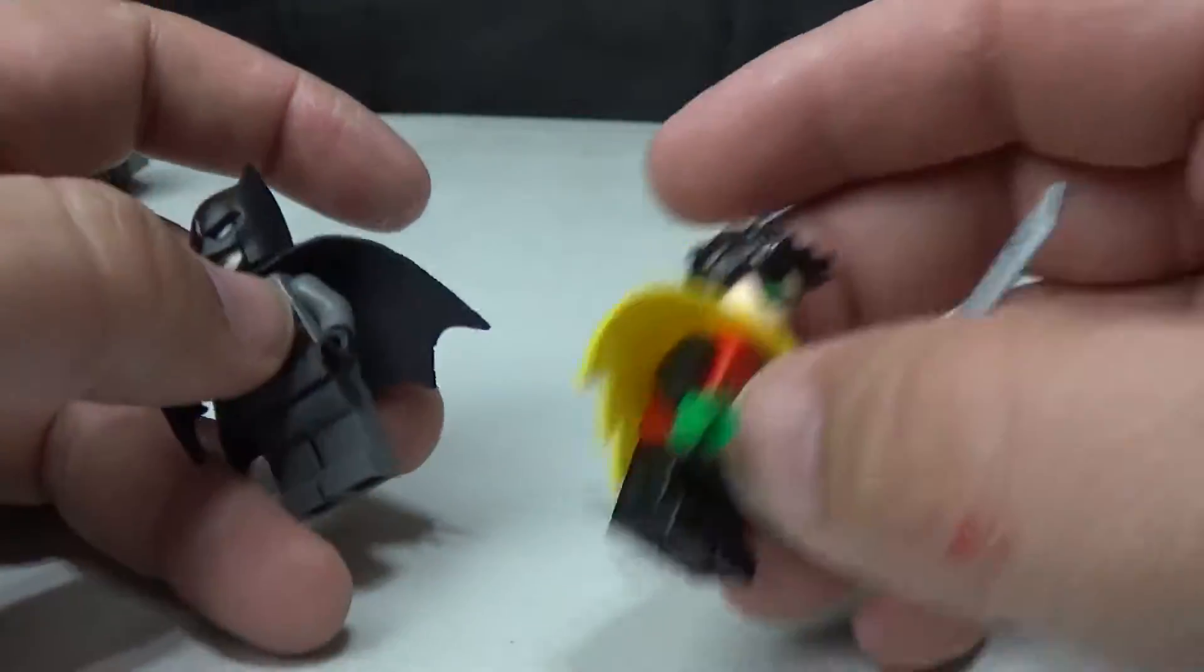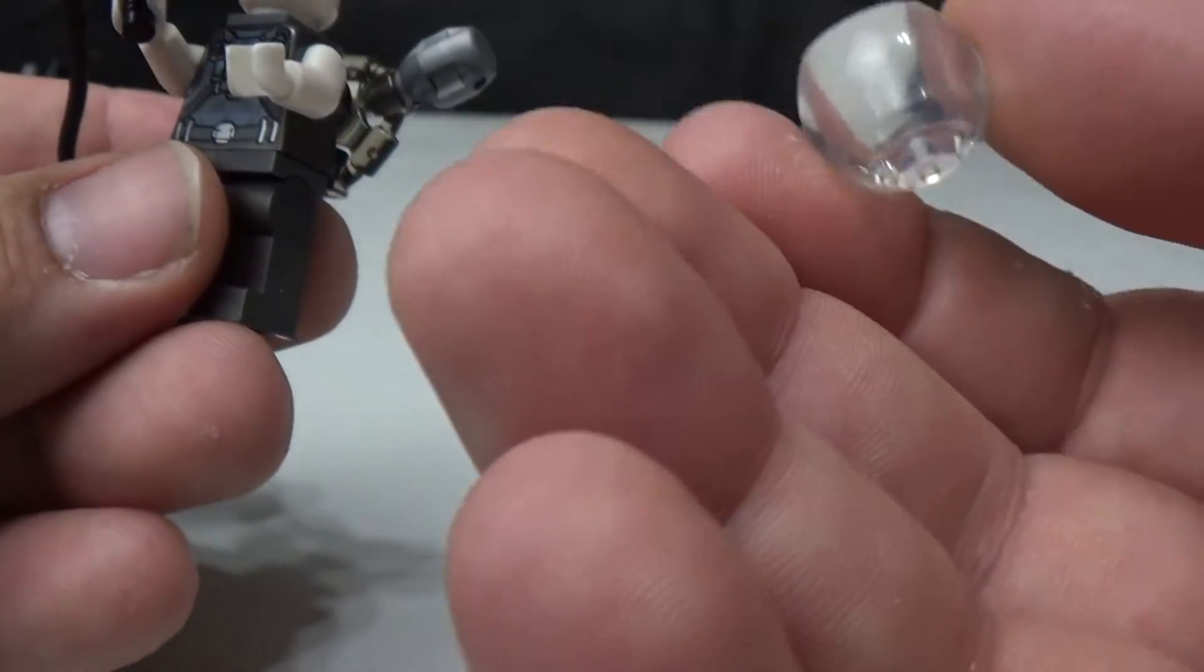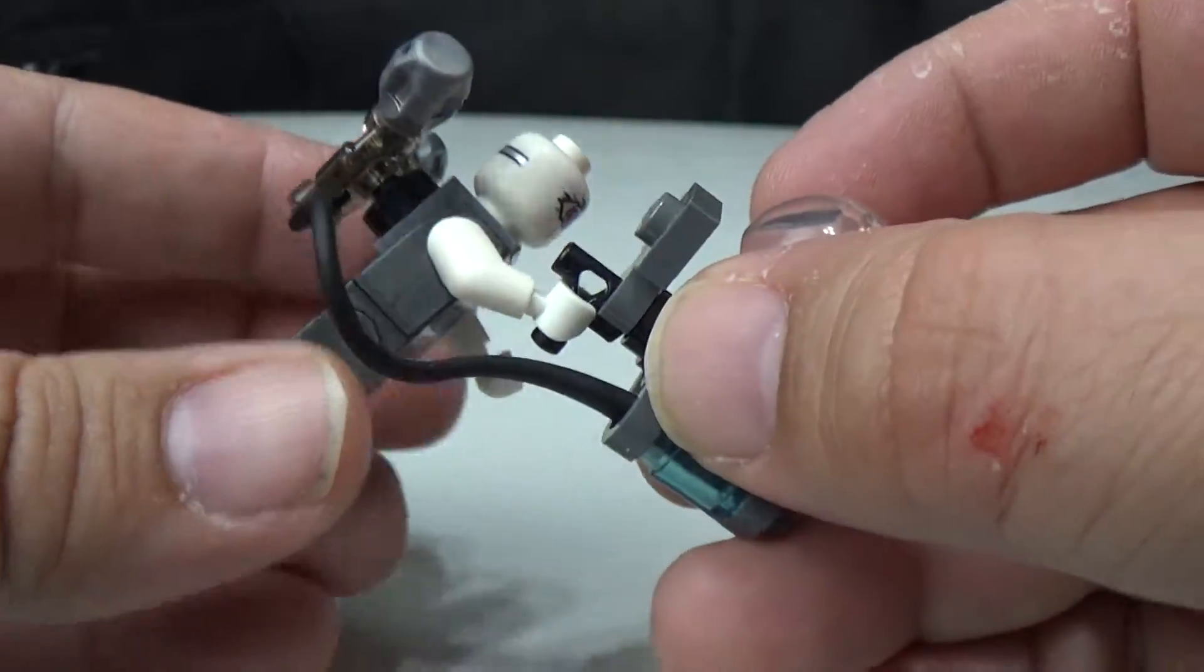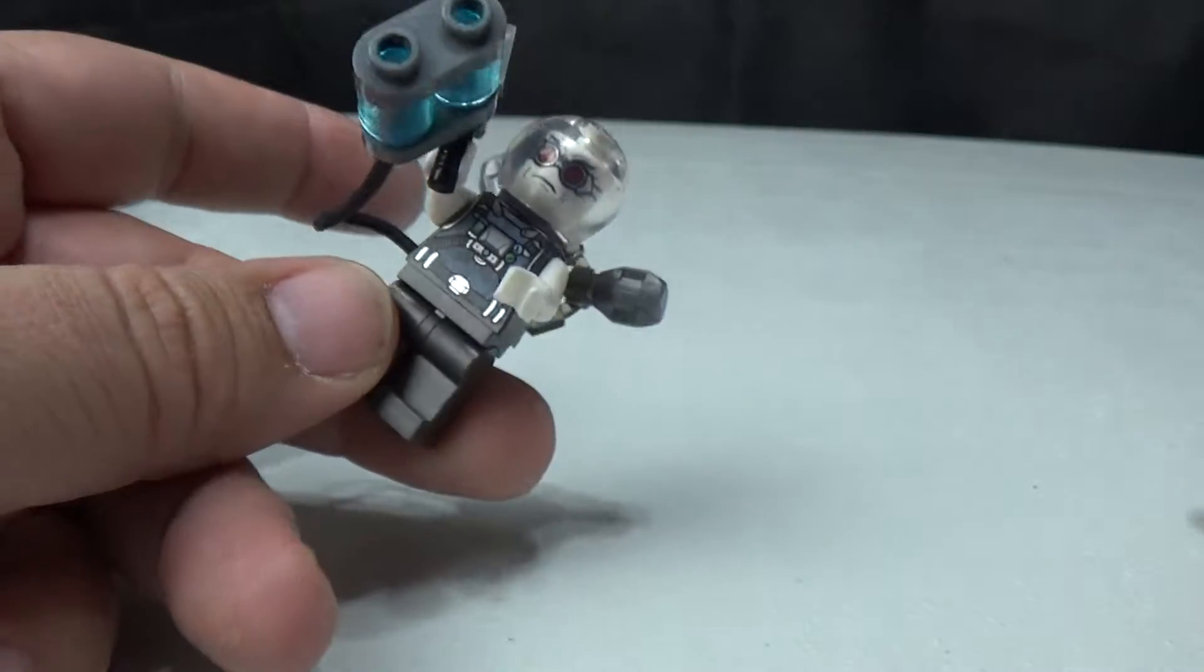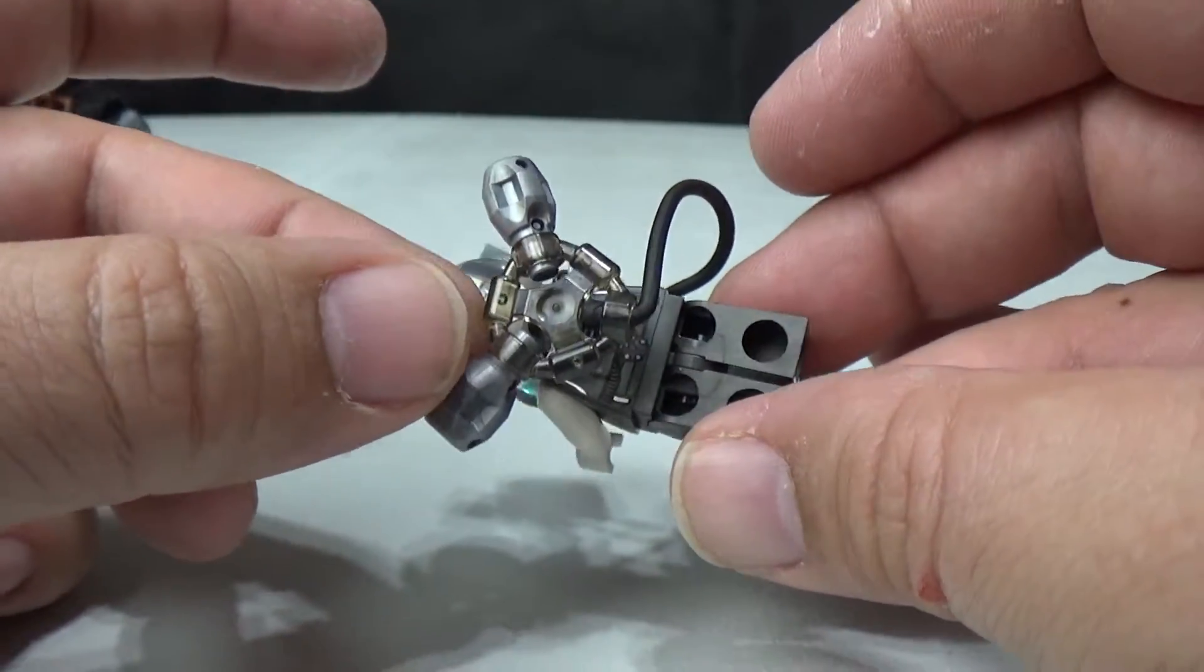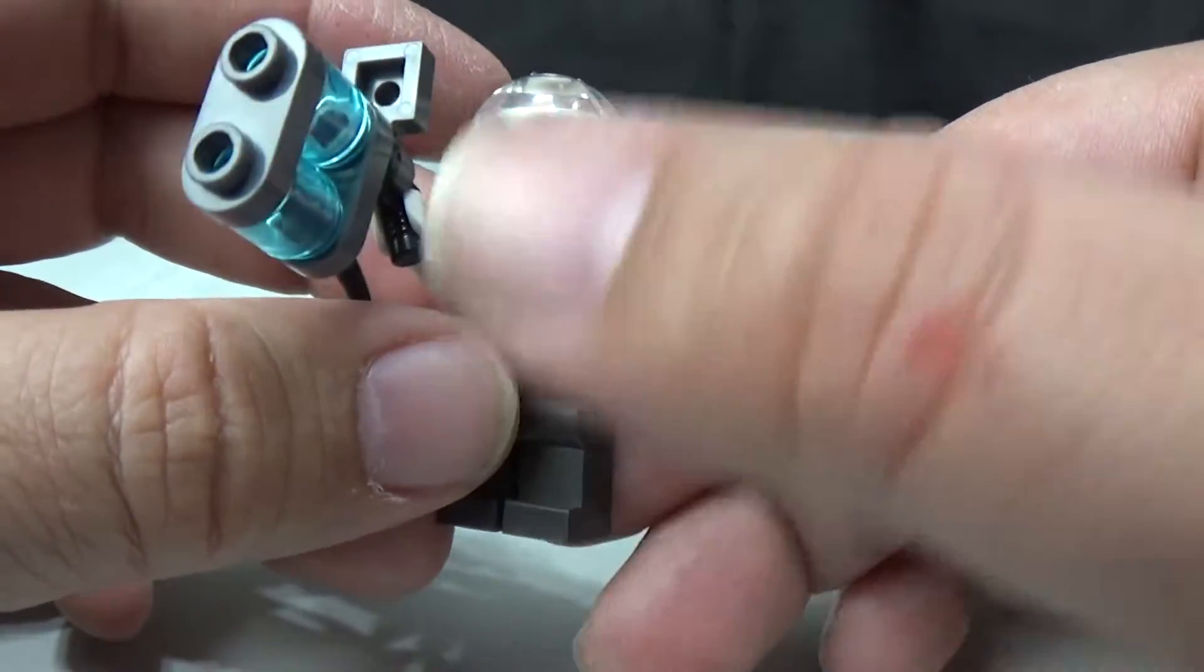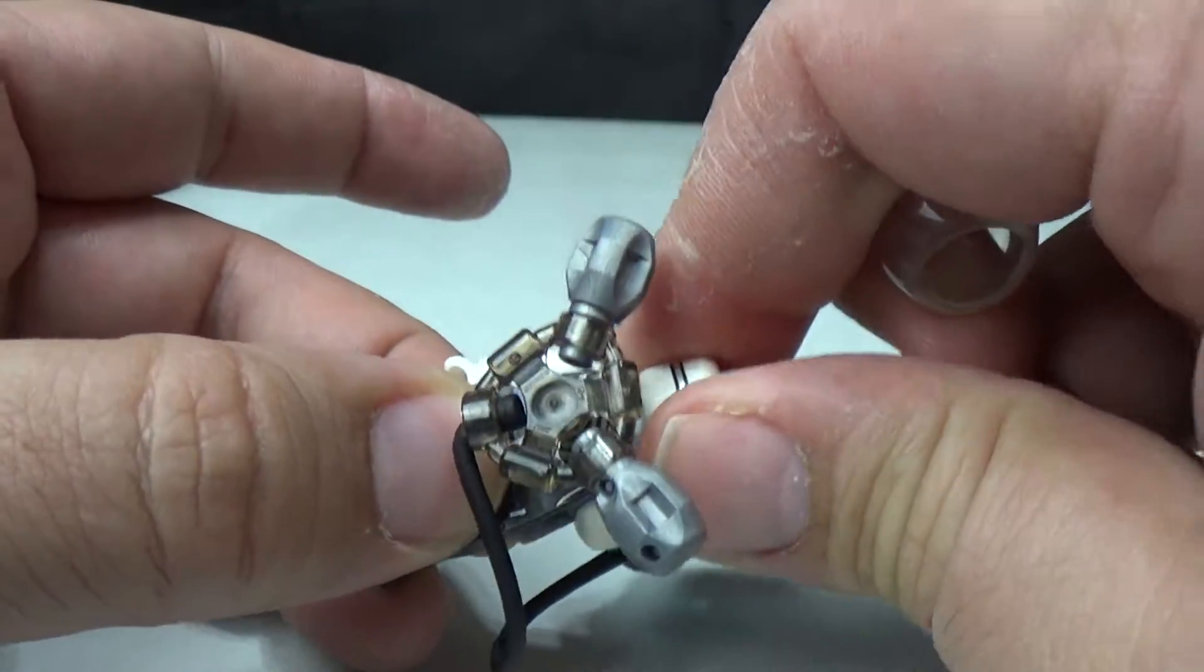Then we've got Mr. Freeze and he's got a fishbowl, a little plastic fishbowl that fits over his head. He has a gun that doesn't shoot. It's not one of those where you press it and it shoots. It took me forever to find this piece here, it's in the box but it might take a while for you to find it.